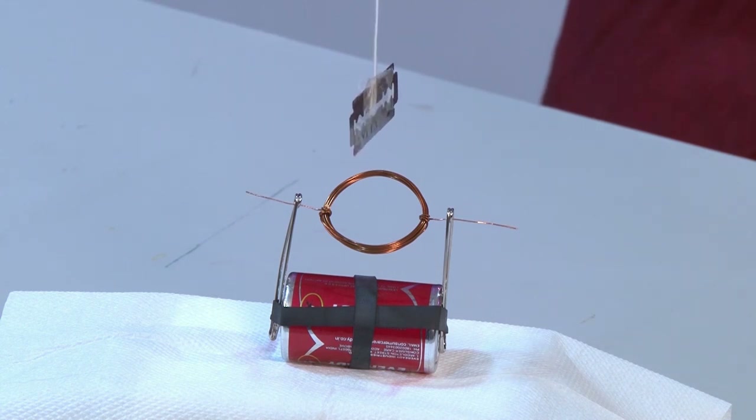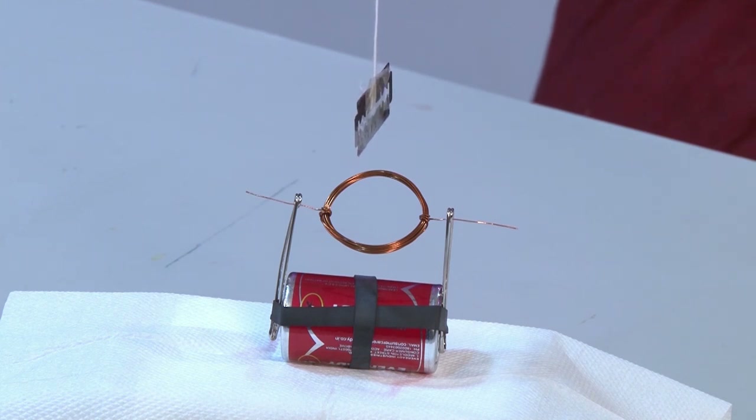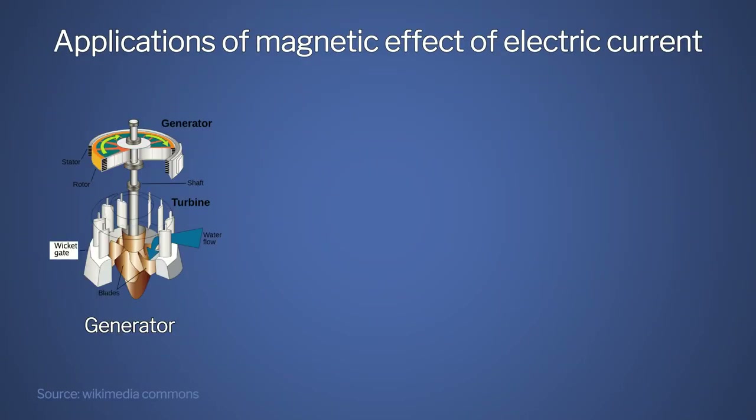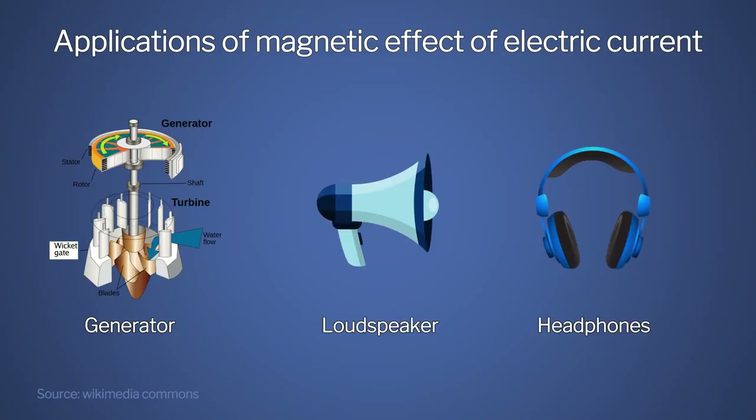From this experiment we see that electric current can induce a magnetic effect in some objects. Thus, an electric current can be used for making temporary magnets known as electromagnets. Daily life examples of magnetic effects of electric current include generators, loudspeakers, and headphones. In the next section we learn about chemical effects of electric current.